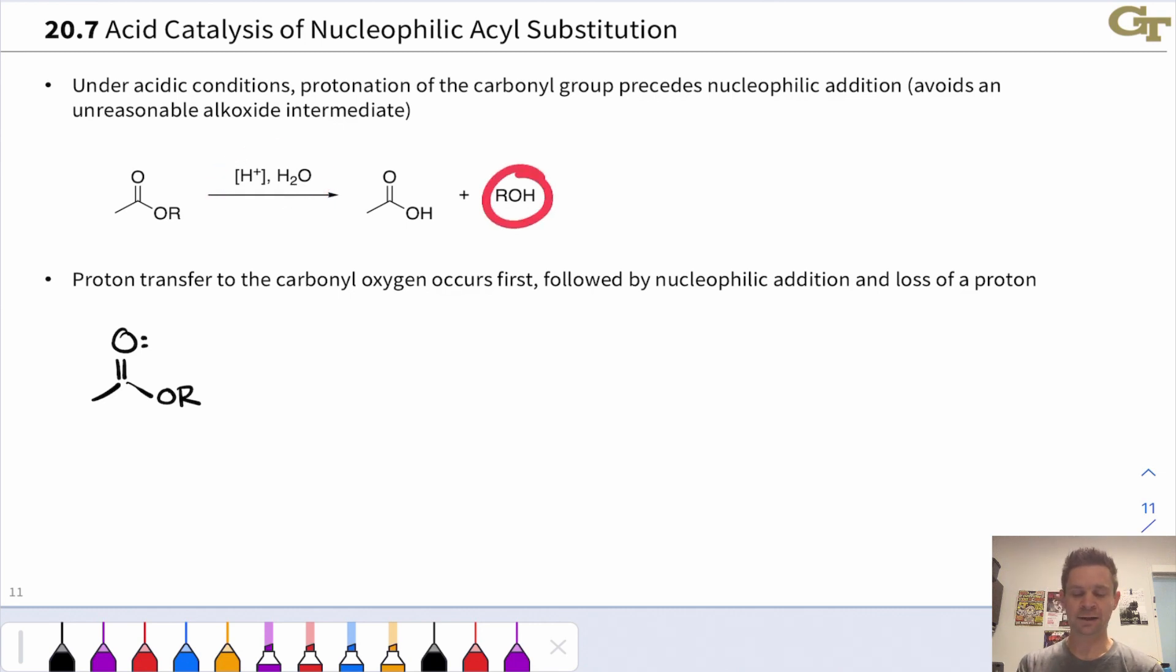you end up with an alcohol, ROH, derived from the alkoxy portion of the ester and a carboxylic acid. This is a nucleophilic acyl substitution process where the nucleophile is water and the leaving group is the alcohol, ROH, and it's acid-catalyzed.